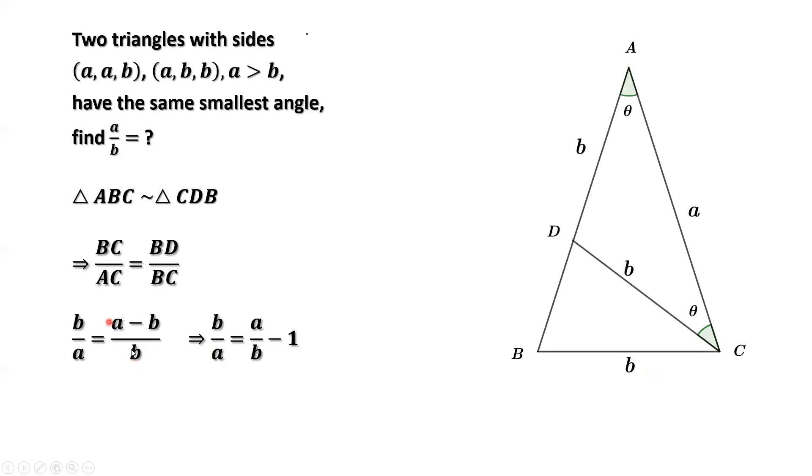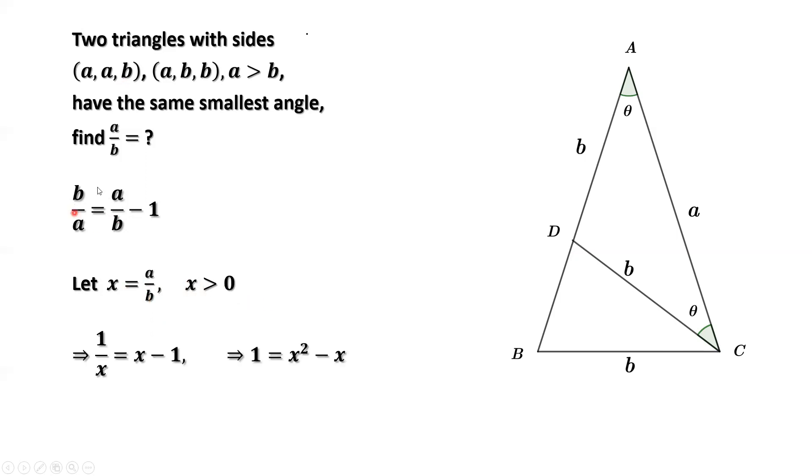Simplify the right-hand side: a over b minus b divided by b, that's 1. So what do we want to find? We want to find a over b. We just let x equals a over b. That means we want to find x. X is the ratio of two sides, so x must be bigger than zero. We write this: a over b, that's x, minus 1 over x. Both sides times x. X is bigger than zero. 1 over x times x is 1. X times x is x squared. Negative 1 times x is x. Move everything to one side.